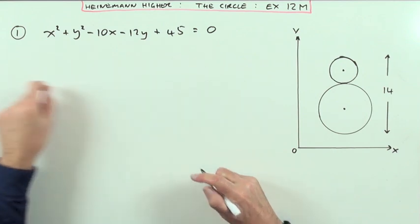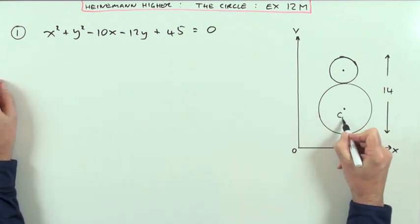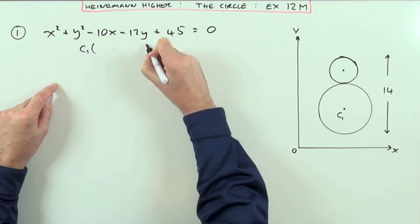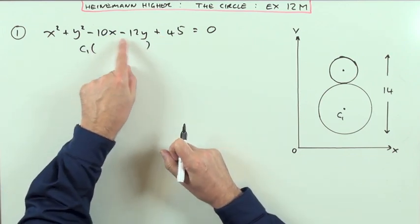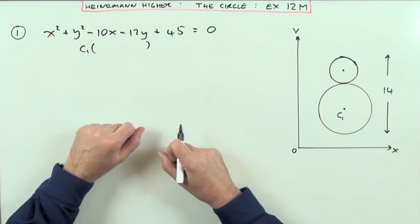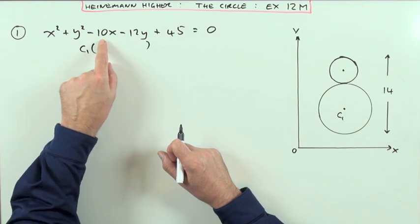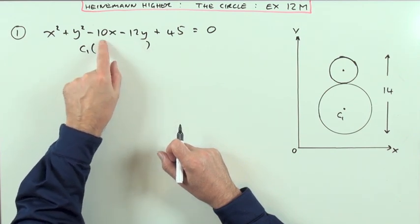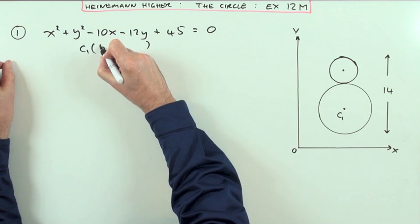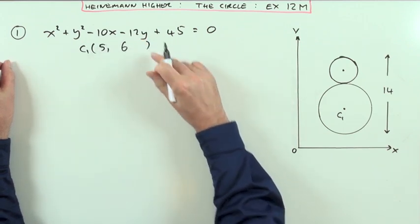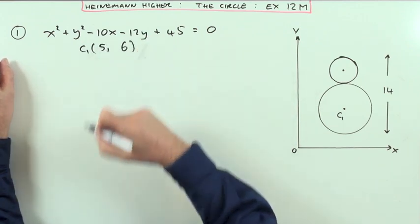So the first thing here would be, what's the centre of this circle? We'll call that one C1. Well, C1 would be, and an ideal position to place it in is underneath these two terms, the x and y term, because the centre will just be half of those, the negative of half of those. So that will be positive 5, positive 6. So the centre's at the point 5, 6.